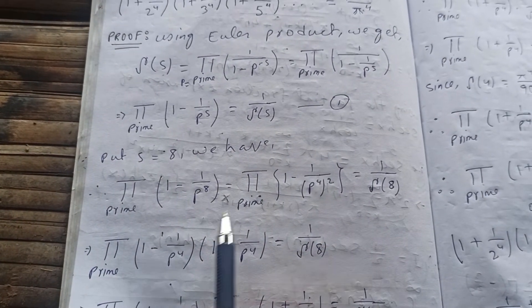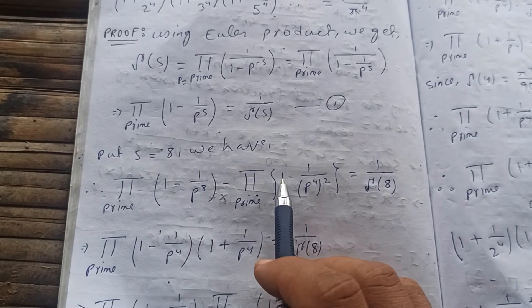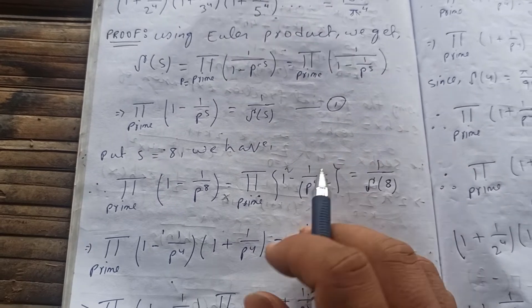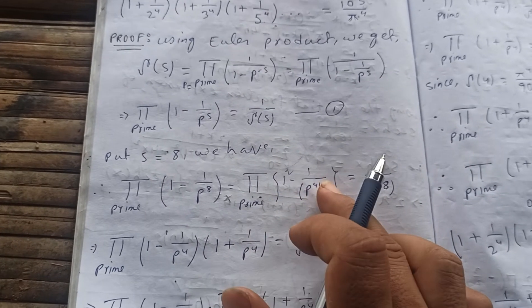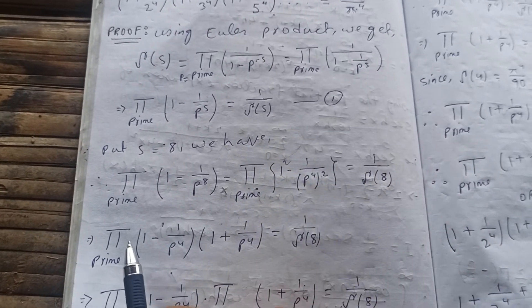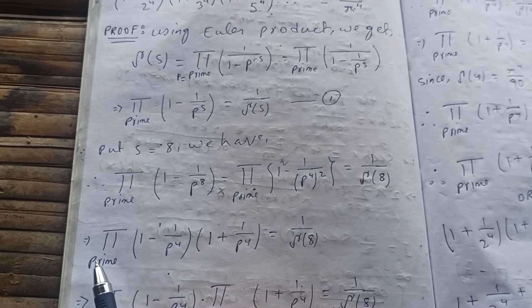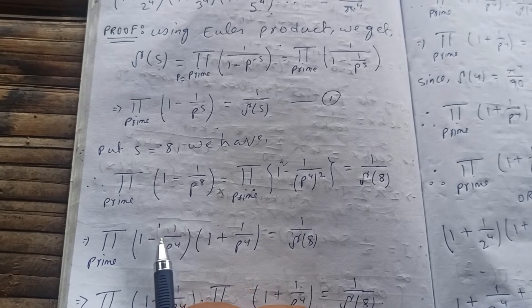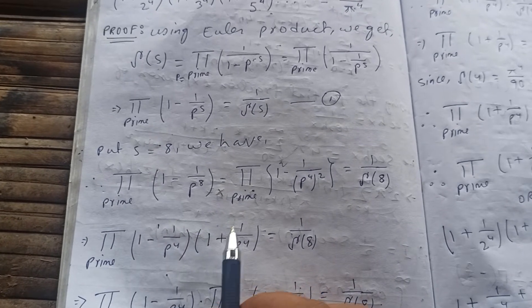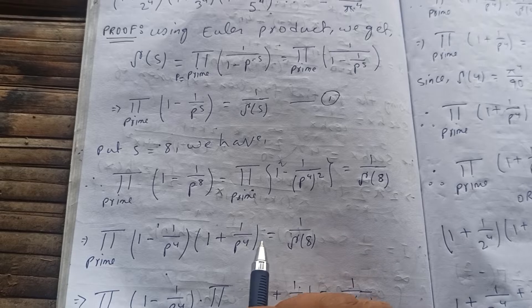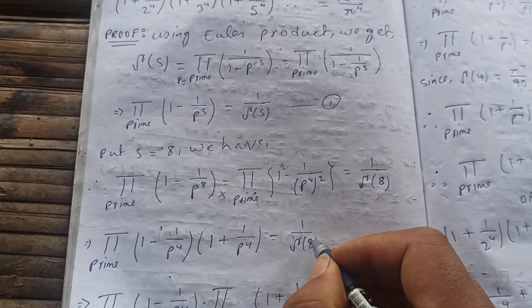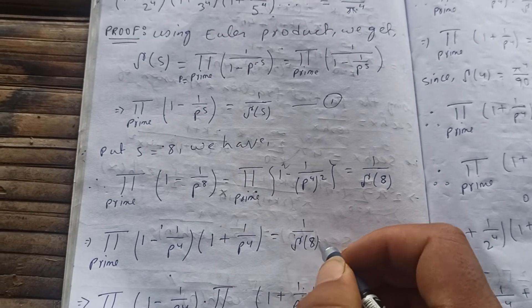We recognize this as a difference of squares — a² − b² = (a − b)(a + b). So the product over primes of (1 − 1/P⁴)(1 + 1/P⁴) equals 1/ζ(8).